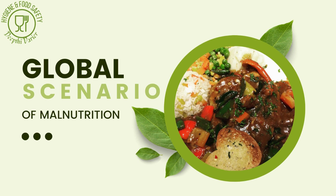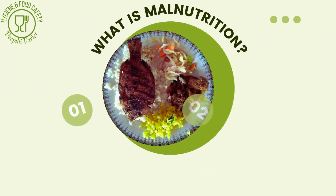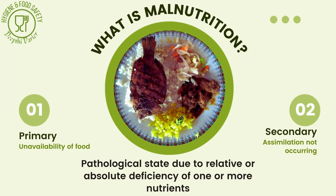When we say malnutrition, it is essentially the pathological state which occurs due to relative or absolute deficiency of one or more nutrients. It can include undernutrition, overnutrition, being overweight or obesity, and non-communicable diseases associated with diet. It mainly affects children, pregnant women, lactating mothers and the elderly, but malnutrition is also rampant amongst the adult population, who are having poorly nourished foods due to a lot of factors.